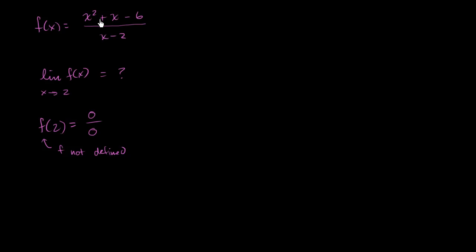Let's see if we can simplify this and try to graph it. You might want to factor the expression on top. This goes back to algebra: two numbers whose product is -6 and whose sum is 1—that's 3 and -2. So this becomes (x + 3)(x - 2) over (x - 2).